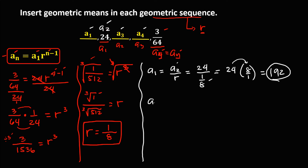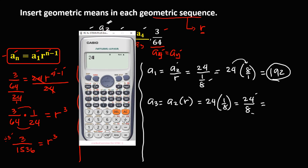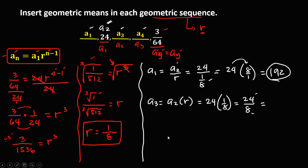For a sub 3, we multiply a sub 2 by the common ratio. So a sub 3 equals a sub 2 times R: that's 24 times 1 over 8, which equals 24 over 8. Simplifying, 24 divided by 8 equals positive 3. So a sub 3 is equal to 3.